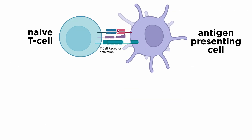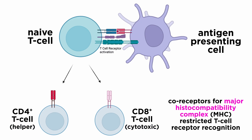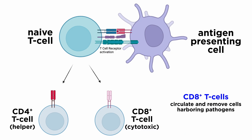T lymphocytes are broadly divided into two subtypes: CD8-plus and CD4-plus T cells. CD4 and CD8 mark the helper and the cytotoxic T cell lineages respectively, and these notable markers serve as co-receptors for major histocompatibility complex, or MHC-restricted T cell receptor recognition, which will be discussed in depth in later tutorials. CD8-plus T cells are circulating T cells that act to remove cells harboring intracellular pathogens, including viruses and transformed cells. CD4-plus cells serve as helper cells to the CD8-plus T cells.